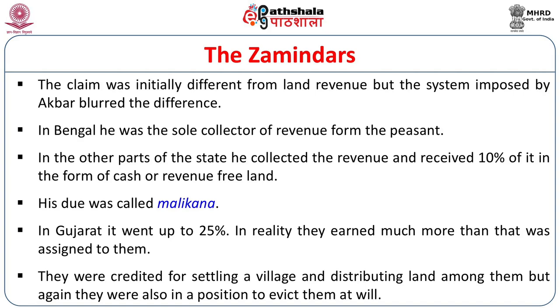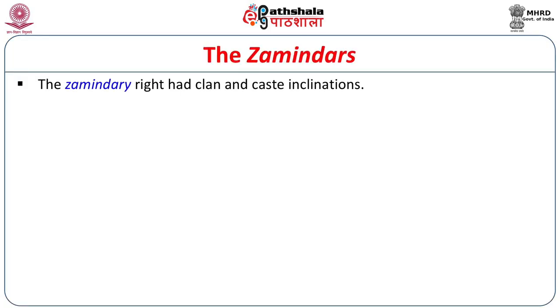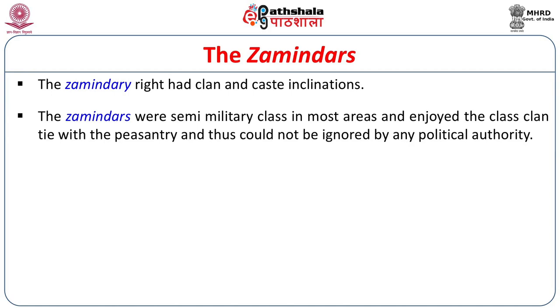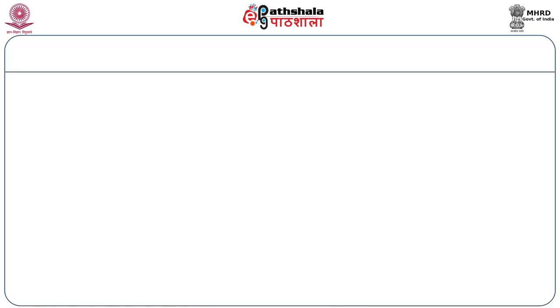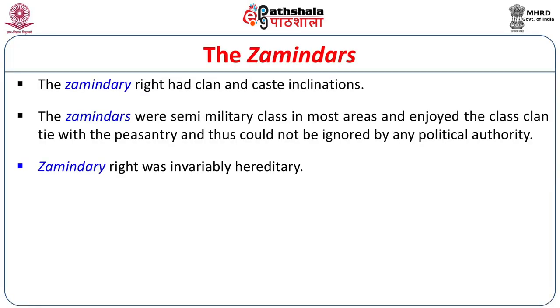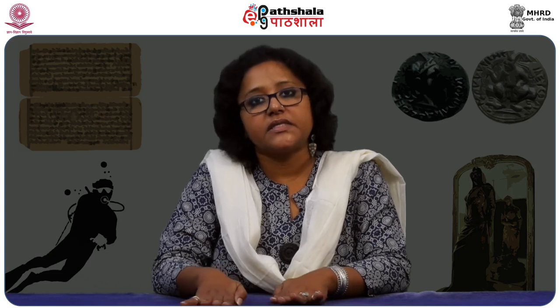They were credited for settling a village or distributing land, but were also in a position to evict peasants at will. The control of the village thus remained in the hands of these hereditary zamindars. The zamindari right had clan and class inclinations in a caste-based society like India. The zamindars were a semi-military class in most areas and enjoyed class and clan ties with the peasantry, making them impossible to ignore by any political authority. At times, they could even give leadership to peasant upheavals. The zamindari right was invariably hereditary, so the attachment of the zamindar to the peasant and the land was always an established fact — this is where they differed from the jagirdars.